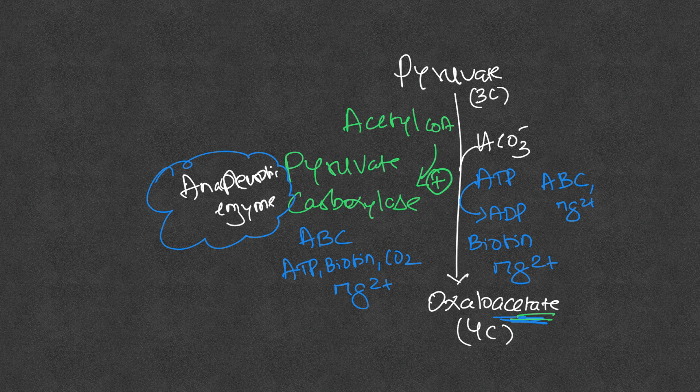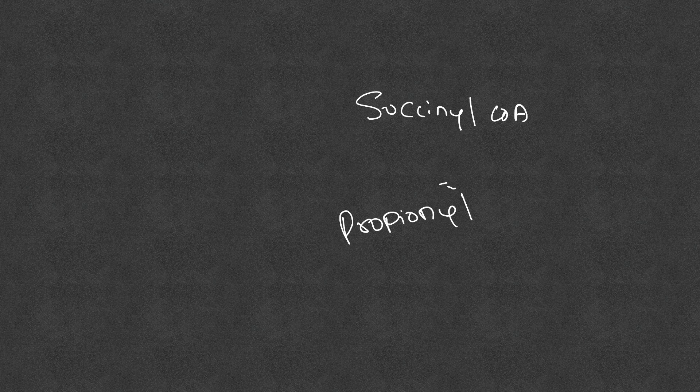There are other anaplerotic reactions that fill different gaps in the TCA cycle. For example, if succinyl-CoA is taken out for heme synthesis, the gap can be filled by propionyl-CoA. Propionyl-CoA can be converted to methylmalonyl-CoA, which is then converted to succinyl-CoA.